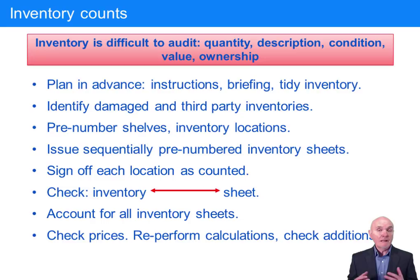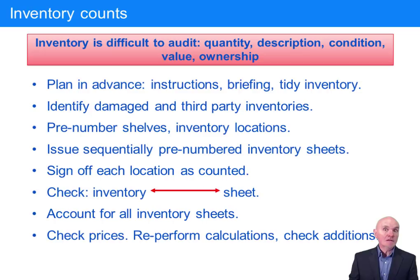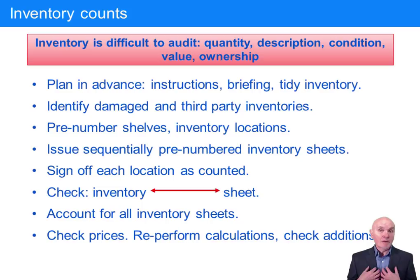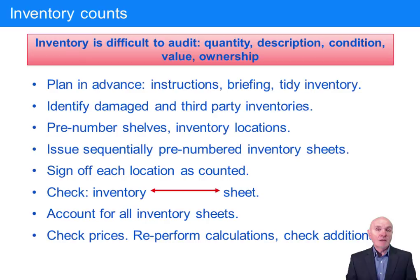We have to assess its condition — has it deteriorated, is it still legal to sell it? Its value, which should be the lower of cost and net realisable value, and its ownership. Just because an item of inventory is sitting in a warehouse or in a shop doesn't necessarily mean it's ours. Some shops take inventory on a sale or return basis, meaning the inventory remains the property of the supplier until it is sold. So the physical presence of inventory doesn't actually prove its ownership.